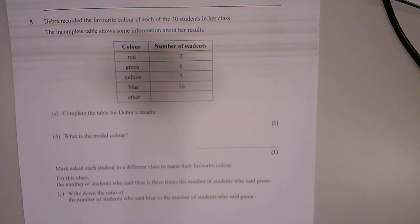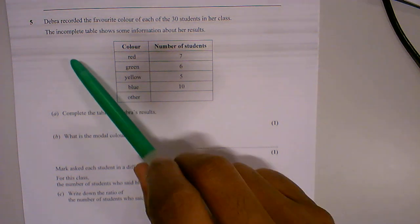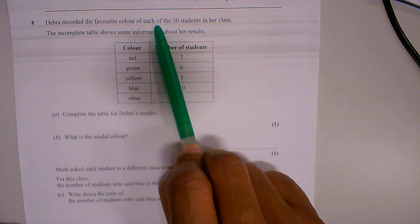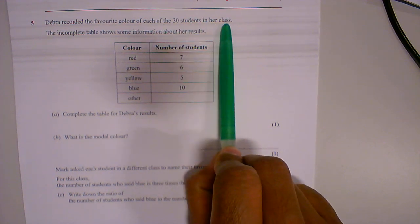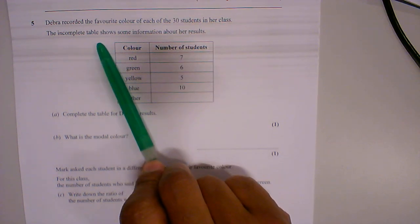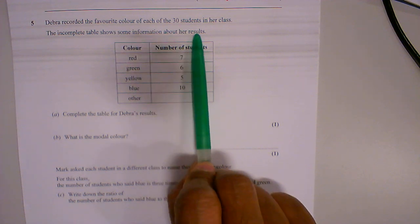Okay, so here is question 5. Deborah recorded the favourite colour of each of the 30 students in her class. The incomplete table shows some information about her results.